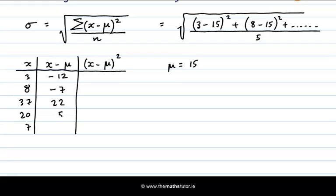20, take away 15, is 5. And 7, take away 15, is minus 8. So these are my deviations from the mean.